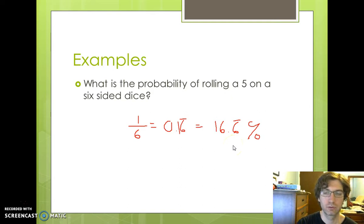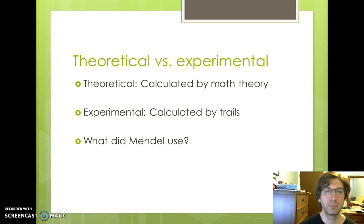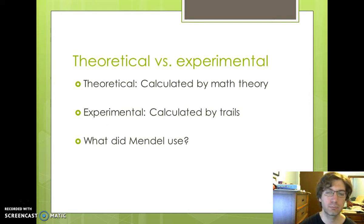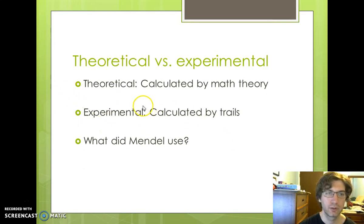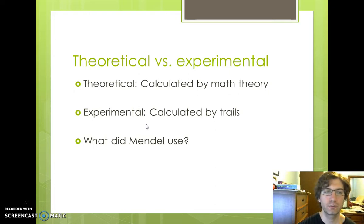It does not matter which way you decide to write that — in this case, it's probably easier just to leave it as 1/6. The next thing you need to know is that there are two types of probability: theoretical probability and experimental probability. Theoretical probability is calculated using math theory, which is what we just did. Experimental is calculated by actually doing trials. Mendel actually crossed his pea plants — he physically bred them — so he performed an experiment and used experimental probability.